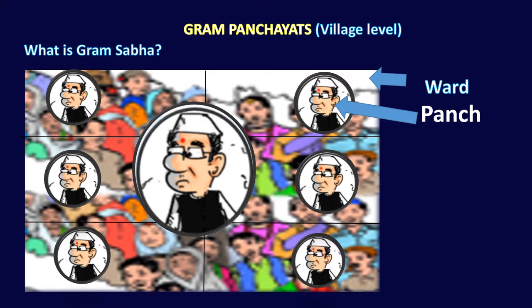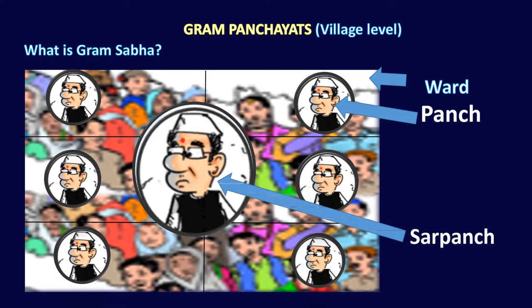The Sarpanch is the president of the village. All the people of the entire village — not just one ward or two wards — elect a president of the village known as Sarpanch or Mukhiya. This Sarpanch and all the Panch together form a village panchayat or Gram Panchayat. So a Gram Panchayat is a council of the Sarpanch and all the ward members.